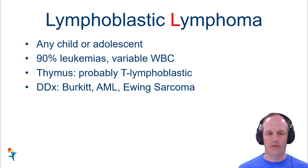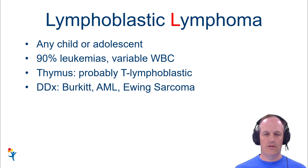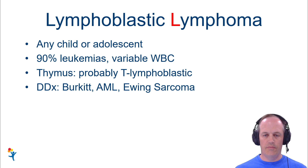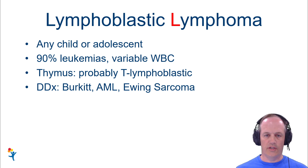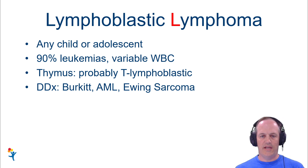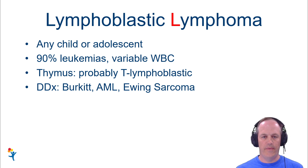Lymphoblastic lymphoma is something you could see in any child or adolescent at any age. It's about 90% of leukemias, and the white counts in these patients are going to be quite variable. You'll have patients with really high white counts, and patients with really low white counts because their marrow is packed full of malignant cells and they're just not having a lot of white cells get into circulation. This is another age and location piece: if you see an anterior mediastinal mass in a very young child, you might want to think about T lymphoblastic lymphoma. A touch prep will be really helpful in that. Your differential obviously includes the different types of lymphomas, but also be mindful of Ewing sarcoma.